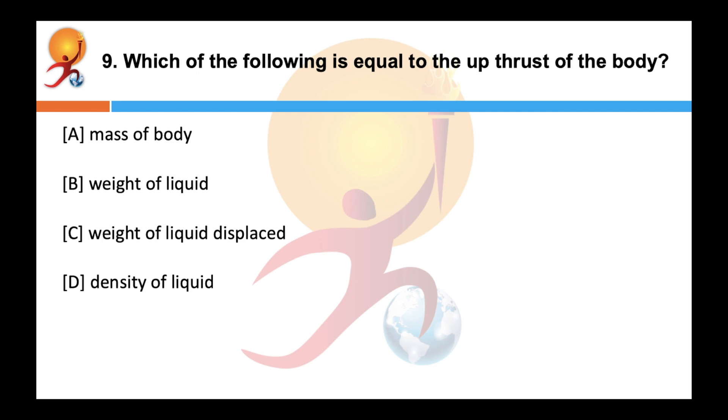Which of the following is equal to the upthrust of the body? Correct answer is C, Archimedes principle. When a body is immersed partially or completely in a liquid, it experiences an upthrust which is equal to the weight of the liquid displaced by the body.